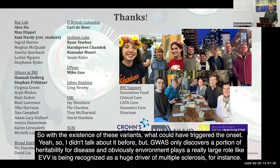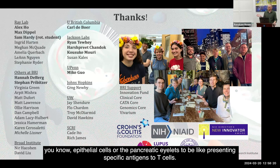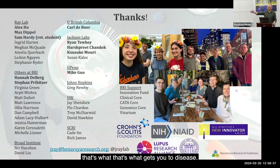[Question: With the existence of these variants, what could have triggered disease onset?] GWAS only discovers a portion of heritability for disease, and obviously environment plays a really large role — EBV is being recognized as a huge driver of multiple sclerosis, for instance. We believe that viral infections are really important for driving these diseases. What we're studying is only a snippet of how variants could affect T cell biology — variants could also affect epithelial cells or pancreatic islets presenting specific antigens to T cells. There are environmental cues that play a role, and many other cell types also have their own genetic variation that drives disease, and collectively that's what gets you to disease.